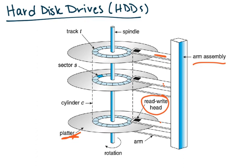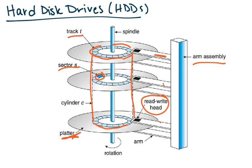The platters are dissected into tracks — shown in blue here — and these tracks are further separated into sectors. Sectors are fixed size; it's usually the transfer size, like 512 bytes, which was the standard until 2010, and now they've moved to 4 kilobyte sectors. These sectors are kind of like your pages or frames. If you combine all the tracks on each platter, you form a cylinder — and that's what it's called.